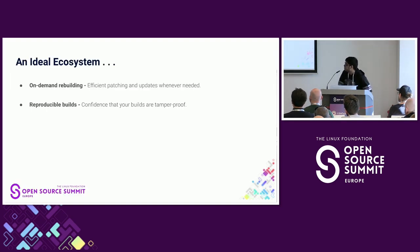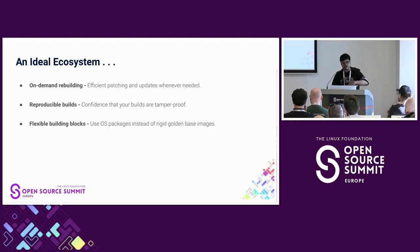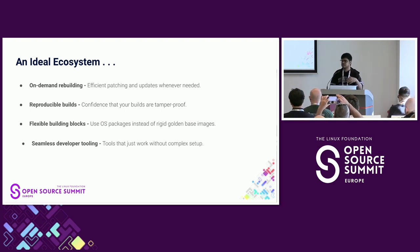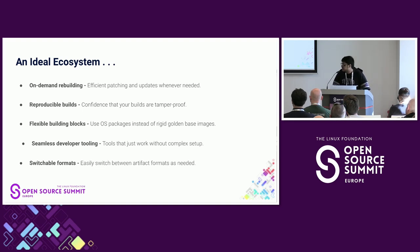In an ideal ecosystem, we'd have on-demand rebuilding so we can declaratively manage and update our OS dependencies. We could build from source with reproducible builds, prove where dependencies came from, and build trust in the software we consume. We'd use flexible OS packages as a building block — not just golden images — because the problem with golden images is they work until they don't, and when they don't, we fall back to big bloated images. We need the flexibility to hook directly into OS package repositories and have seamless tooling. When we have all this, maybe we can consider switching to a new image format — that would just be a detail at that point.